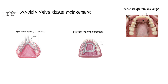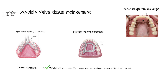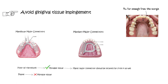The mandibular clearance is 4 mm because the floor of the mouth — a movable tissue — is located beneath it. So the mandibular major connector must be located far from both the gingival margins and the floor of the mouth. The palate normally does not have movable tissue, which is why more space can be provided between the gingival margins and the maxillary major connectors.